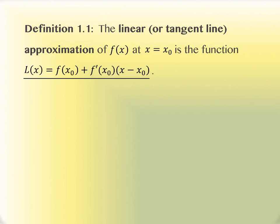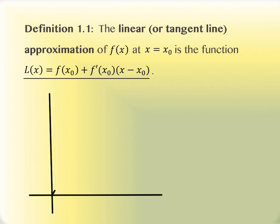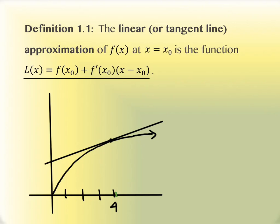Let me draw you a picture of what this looks like — you can put it next to the definition in your notes. Let's say we have that square root graph, which looks approximately like this. Say we were interested in the point x equals 4, which is about right here. And 4.1 is very close to this — I'll mark it slightly to the right in green. We could draw a tangent line at this point, approximately like that.